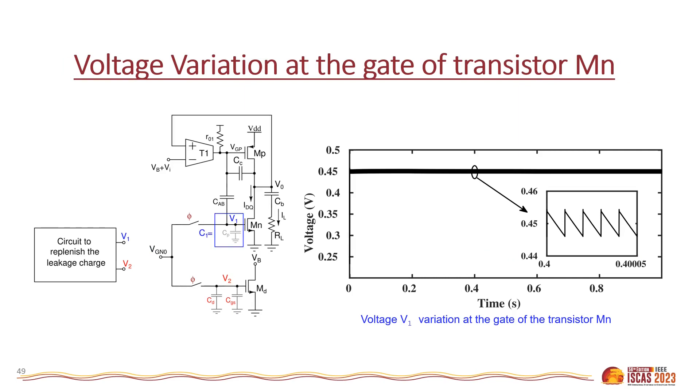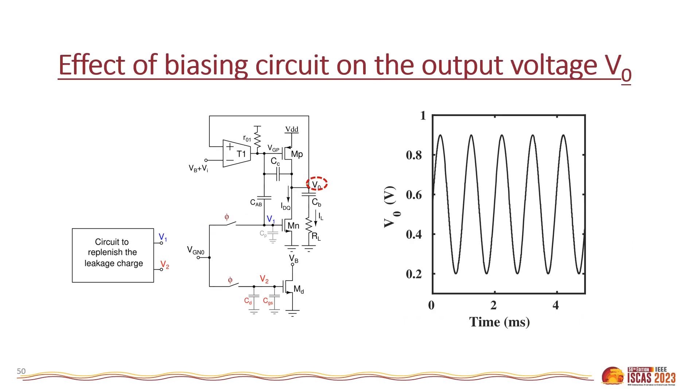The plot in right shows the variation in voltage V1. Here the voltage V1 is decaying linearly and after every time t equals 10 microseconds, the replenishing phase is switched on and voltage V1 is restored to its initial value of 450 millivolts. As it is refreshed after every 10 microseconds, voltage V1 has a ripple of 9 millivolts.